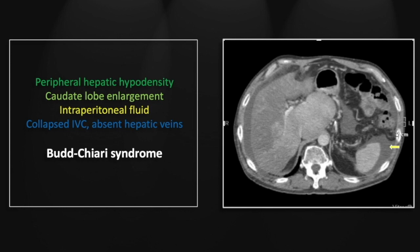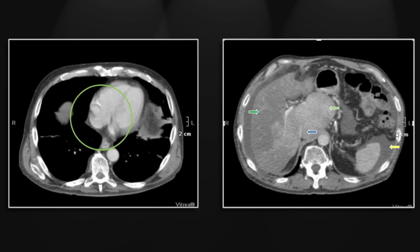Note also intraperitoneal fluid consistent with portal hypertension and the narrowing of the IVC. On higher cuts you'll see the absent hepatic veins, most likely inflammatory, whereas the IVC narrowing could be partially inflammatory but can also be clearly attributed to the caudate lobe hypertrophy.